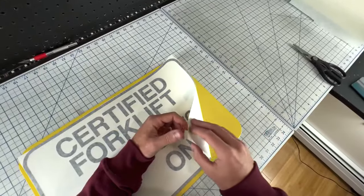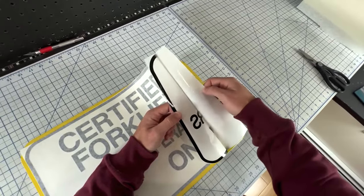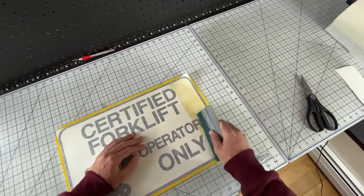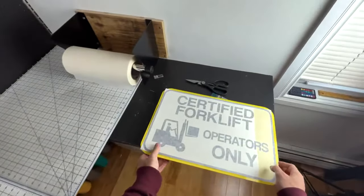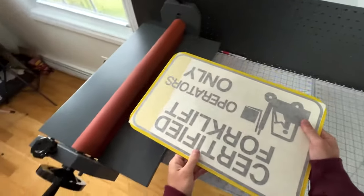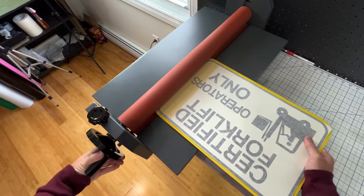This part here of putting the decal on the sign is probably the trickiest part. Trying to get it aligned on these big rectangle signs for some reason is just a lot harder than like a street sign size. Over time and doing hundreds of them at this point, I've gotten a lot better at it and it's easier, but at first it was actually really difficult.